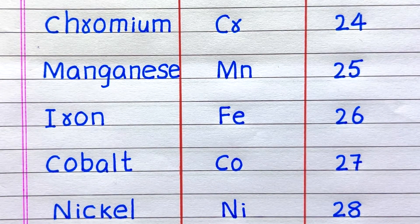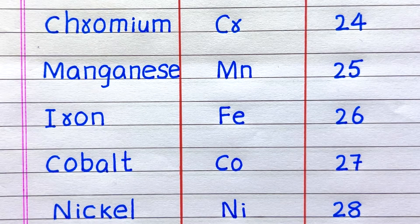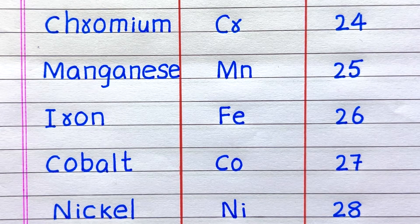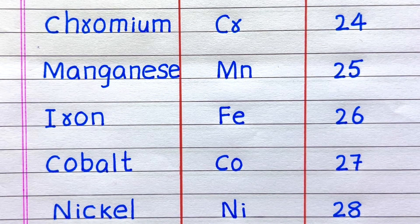The twenty-fourth element is Chromium, symbol Cr, atomic number 24. Twenty-fifth, Manganese, Mn, 25. Twenty-sixth, Iron, Fe, 26. Twenty-seventh element is Cobalt, symbol Co, atomic number 27. Twenty-eighth, Nickel, Ni, 28.